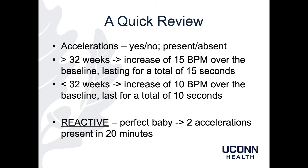Moving on from baseline and variability, the next thing you're going to want to present is accelerations. Accelerations are sort of a yes or no — they're either present or absent. You don't describe them any other way. The way we define accelerations has to do with gestational age. For a baby at greater than or equal to 32 weeks, there needs to be an increase of 15 beats per minute over the baseline, with the acceleration lasting a total of 15 seconds. Importantly, it's not the peak that needs to last 15 seconds — the peak just needs to hit 15 beats per minute over the baseline, and then the whole hump, which is the acceleration, needs to last 15 seconds.